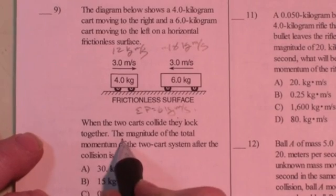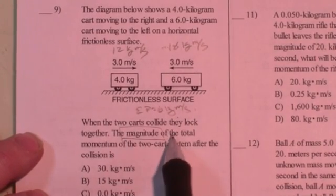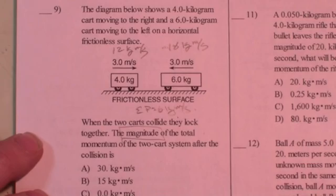Now they said the magnitude, which means simply the number. If they asked for the magnitude and direction, it would be 6 kilogram meters per second towards the left.